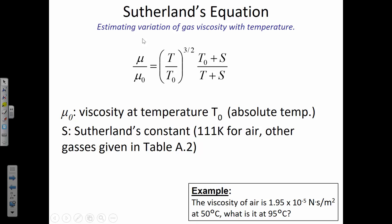Sutherland's equation allows you to estimate the viscosity of a gas at temperatures other than what you have data for. If you've got a table giving viscosity at one temperature but your problem is at another, Sutherland's equation solves that. It relies on a Sutherland's constant that you look up for the specific gas — for air, Sutherland's constant is 111 Kelvin. Since you've got a homework problem on it, let's try one in class as an example.